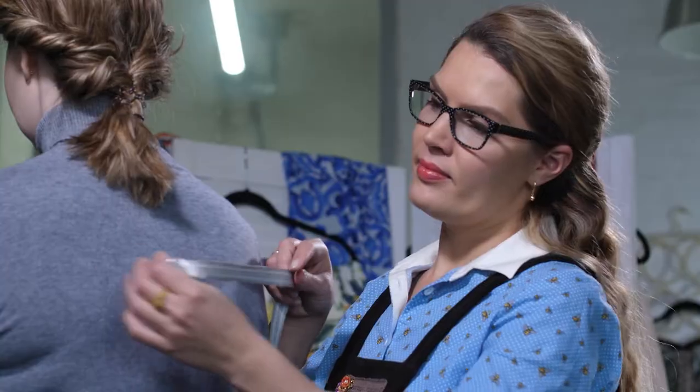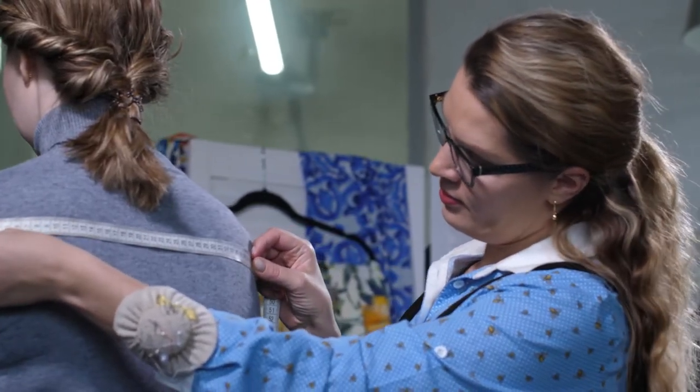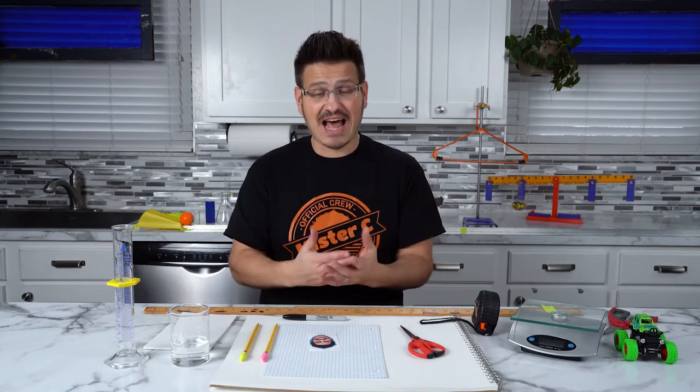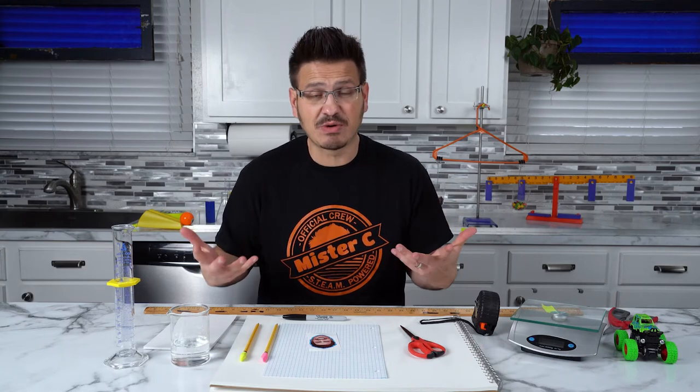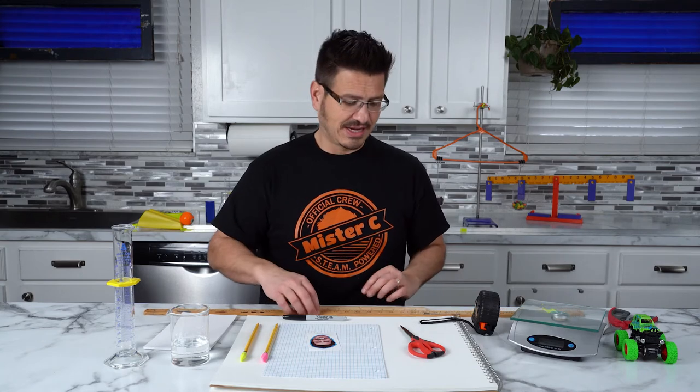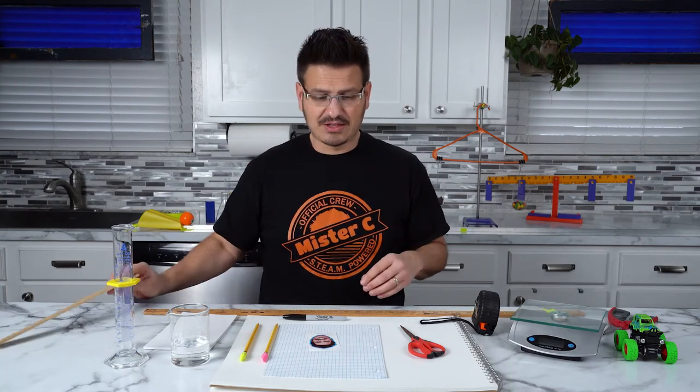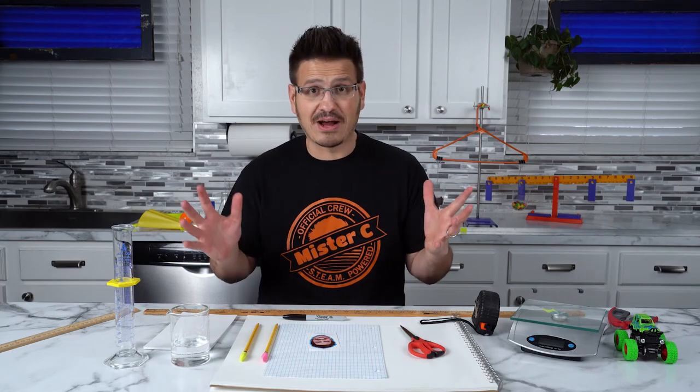Measurement is all around us. We can actually measure things like — a seamstress might measure clothes when they're making an outfit for somebody. Or how long it's been since your last birthday, or how long you've actually lived your life in seconds. We know how many years we've lived, but have we ever thought about how many minutes or how many seconds we've lived? So when we talk measurement, it's so much more than just getting out a ruler or a stopwatch — it's about understanding the language of weights and measures.